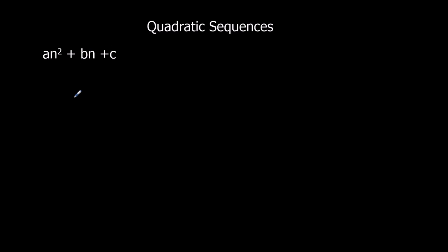I'm going to show you why it works — the proof of this method — before moving on to using it. You don't have to know how to prove it, you just have to know how to use it. I'm going to generate the sequence in general terms, with a, b and c still in it.